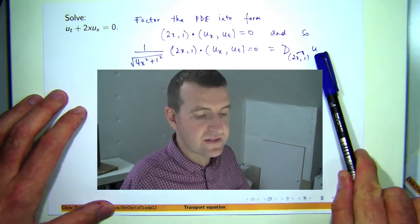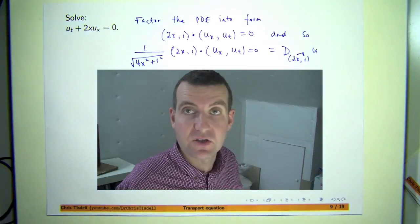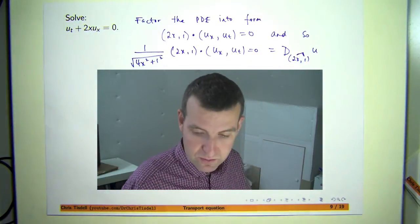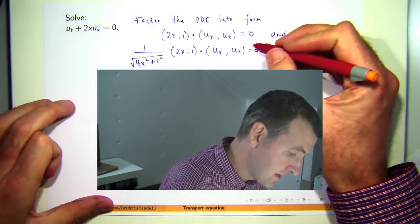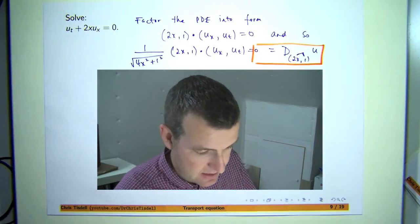So the directional derivative of the solution u in the direction of the vector is zero at all points. So that's a big, big step here.